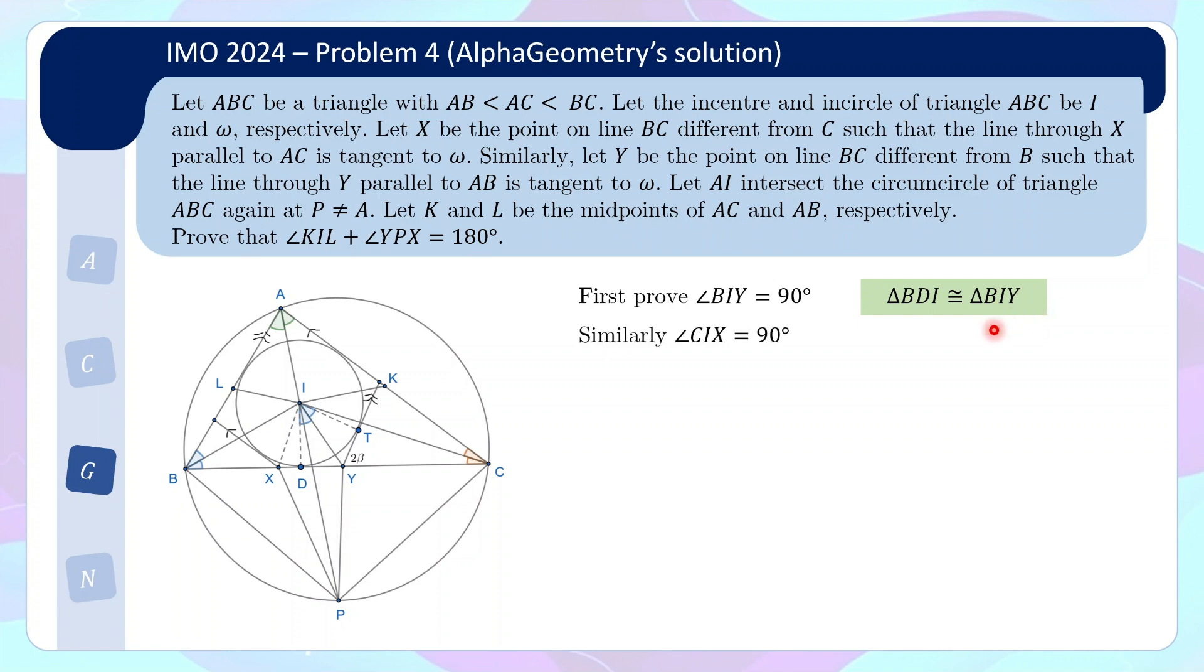Now, by similar arguments on the other side of the triangle, we can also prove that CIX is 90 degrees. So I think you might be pretty convinced that because BIY, the corresponding vertices, if you reflect the triangle is actually CIX. So I think it's quite reasonable to expect that CIX will also be 90 degrees. And I will leave you to do the same angle chasing yourself.